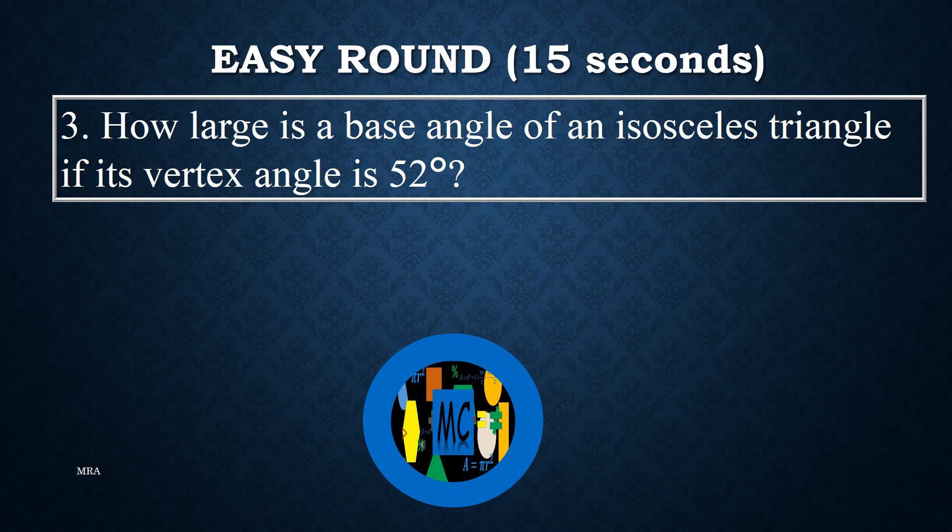Problem 3. How large is a base angle of an isosceles triangle if its vertex angle is 52 degrees?